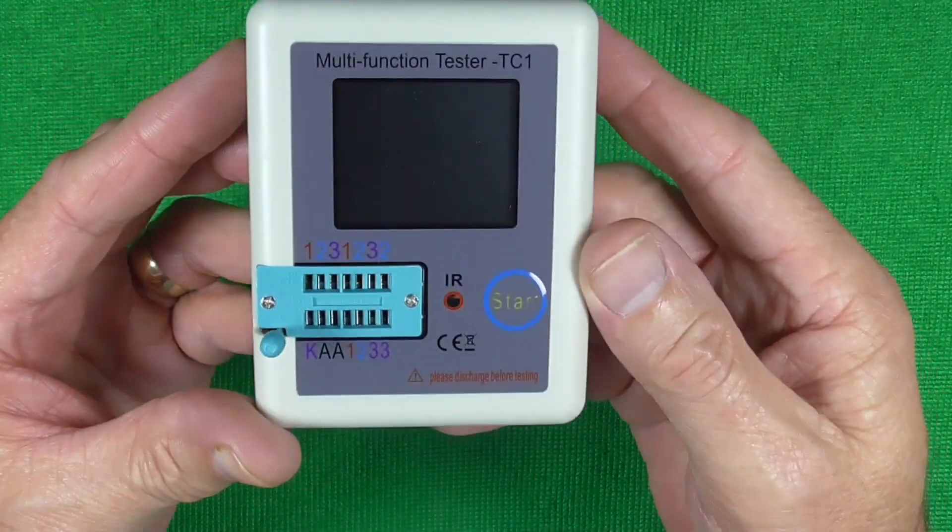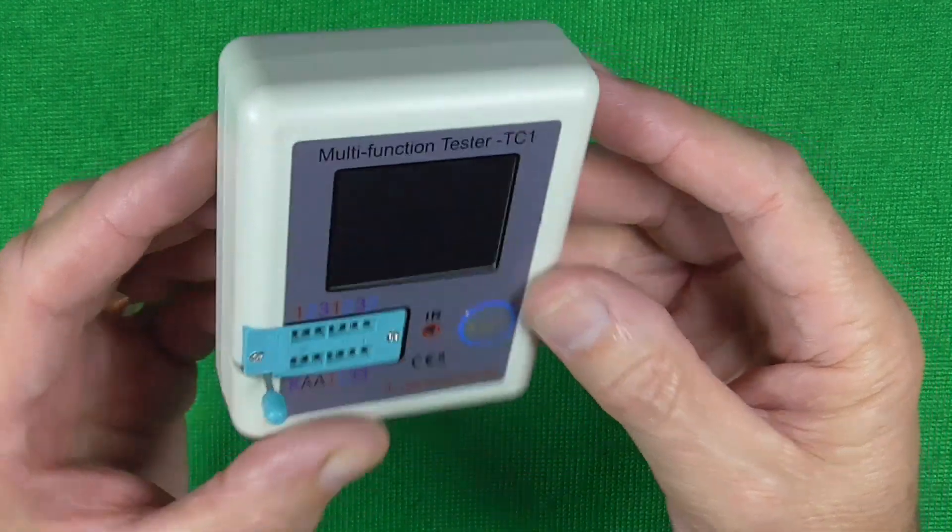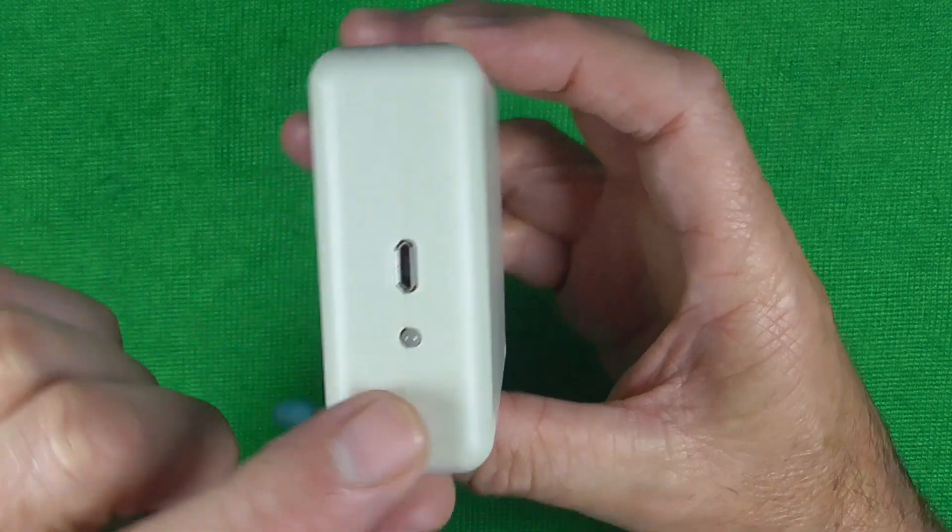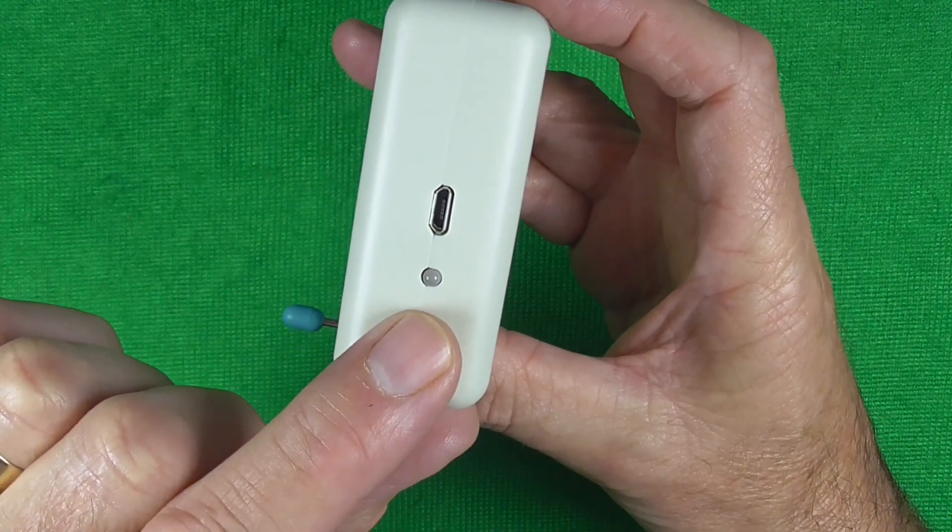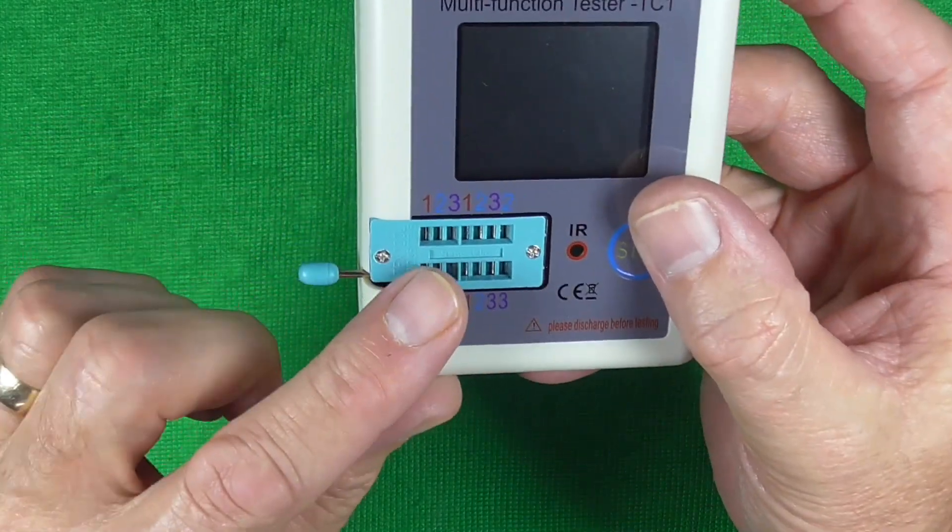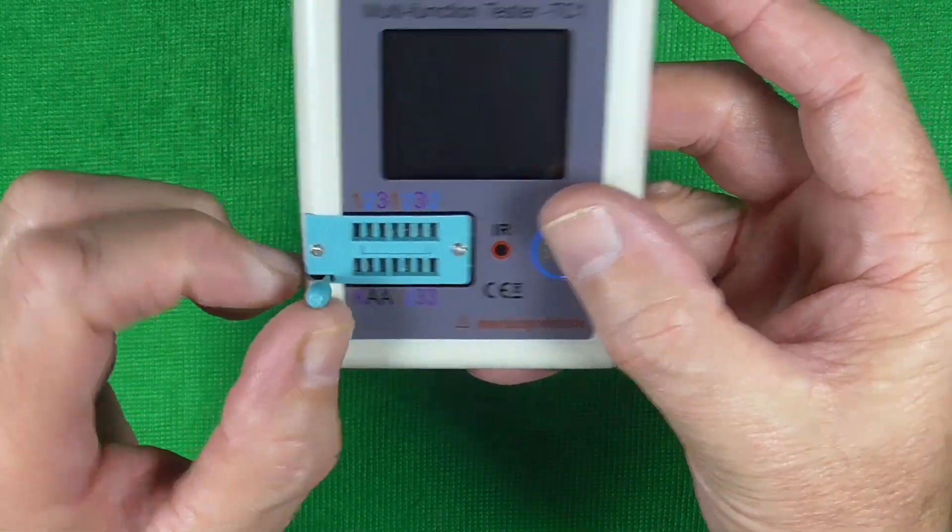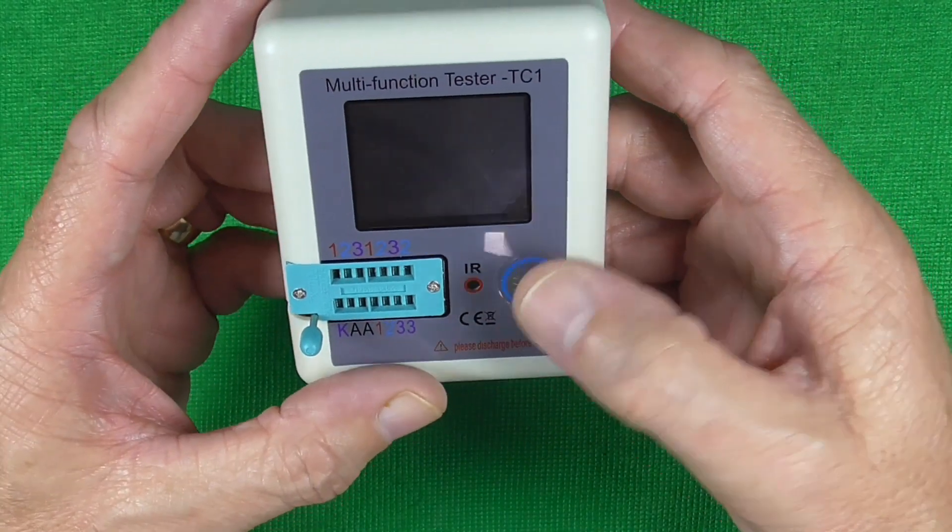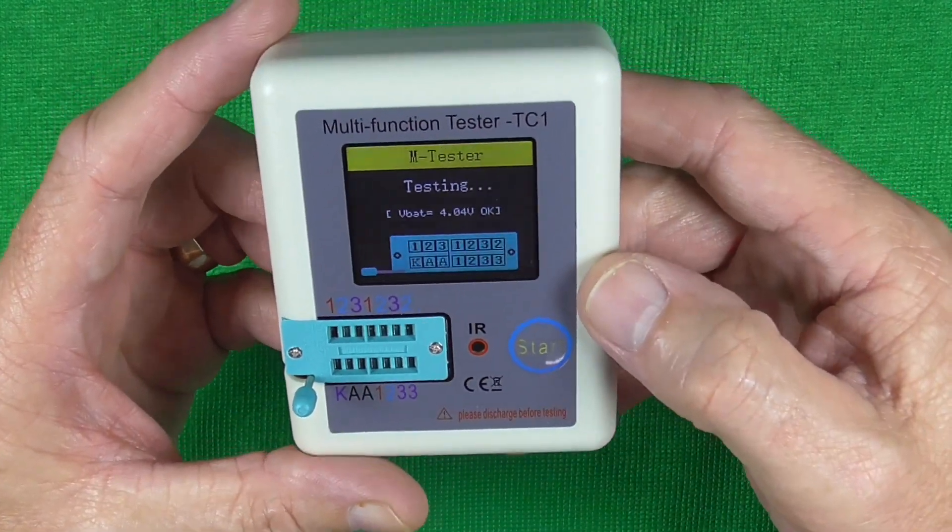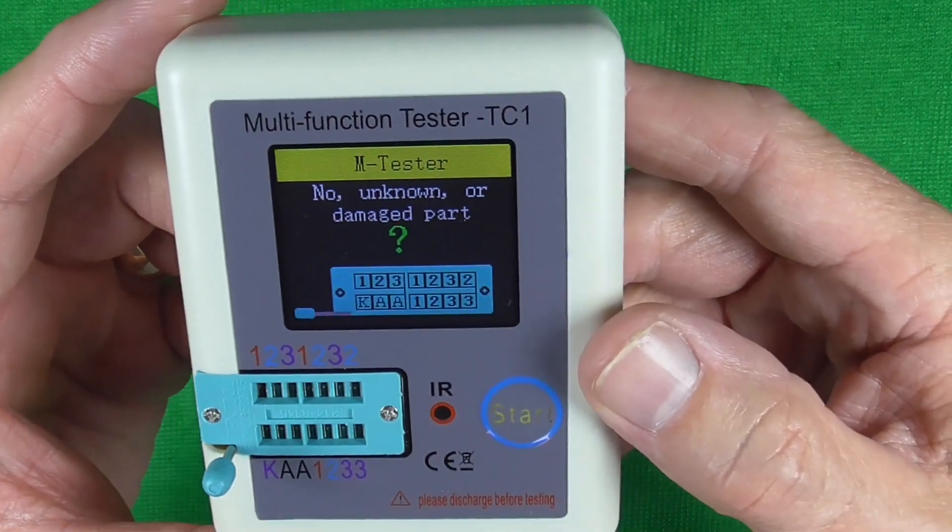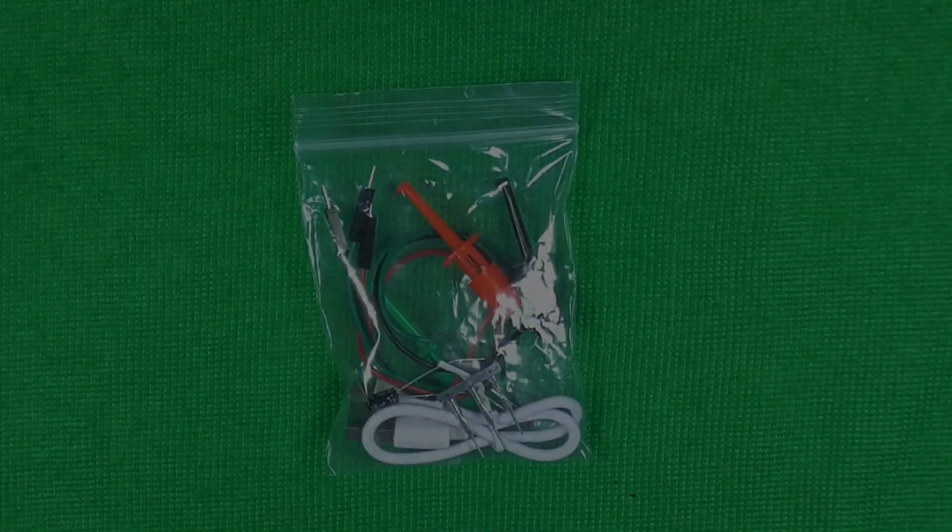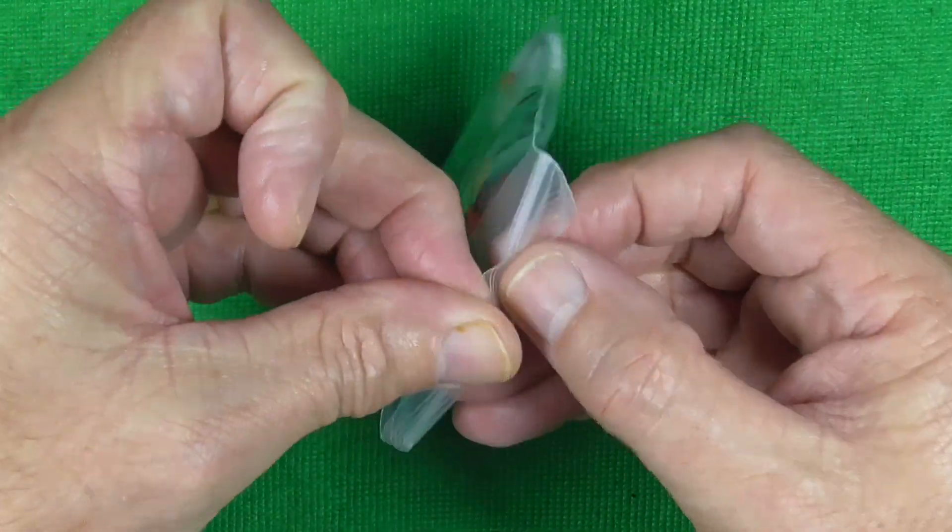So that's the unit itself. Charging port on the bottom—I would imagine that will be the charging indicator. And you've got your port for testing, start key, and of course your display. Give it a press. And that's what the display looks like. Let's have a look at these other bits.